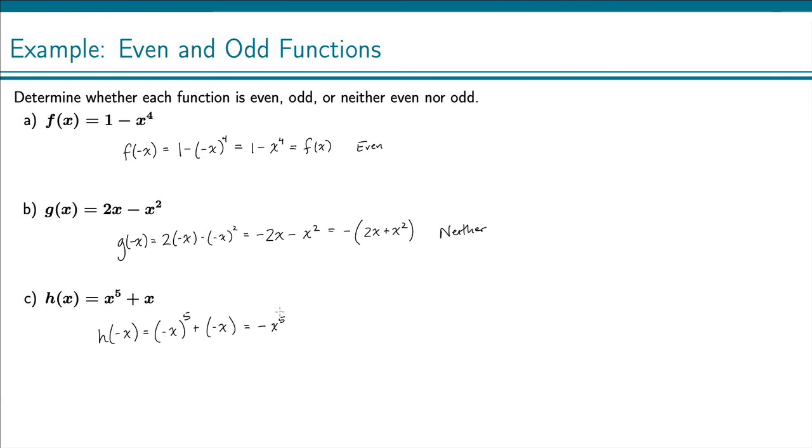Notice this is different because here the negative is with the x and being raised to the fifth. Here we have x to the fifth and then a negative in front of that. And then we have plus negative x, which is the same thing as minus x.